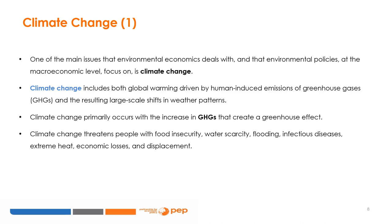These human impacts have led the World Health Organization to call climate change the greatest threat to global health in the 21st century. Even if efforts to minimize future warming are successful, some effects will continue for centuries, including rising sea levels, rising ocean temperatures, and ocean acidification. The Modeling the Impacts of Climate Change on Agriculture in PEP 1T module focuses on how to specifically model climate change impacts within a CGE modeling framework.